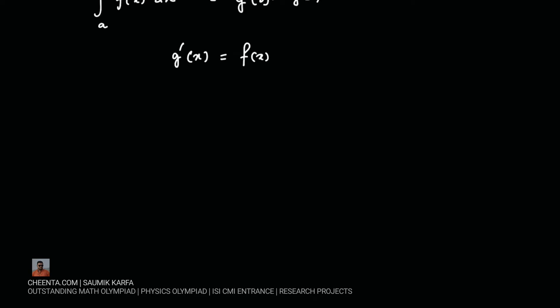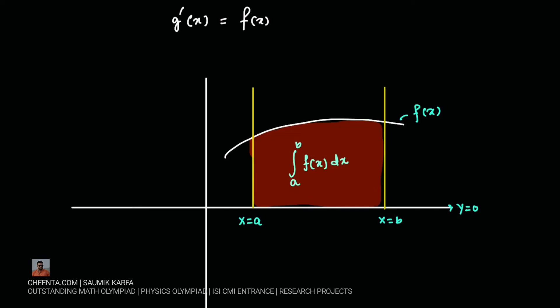Now the geometrical interpretation of definite integral is, if we are given a function f(x), integrating it within the limit x equal to a and x equal to b means finding its area bounded by the curves x equal to a, x equal to b, the curve itself y equal to f(x), and the x axis y equal to 0. So finding out area of this red region would be the geometrical meaning of the definite integral.